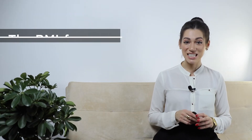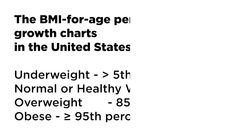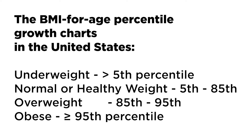The BMI-for-age percentile growth charts are the most commonly used indicator to measure the size and growth patterns of children and teens in the United States. BMI-for-age weight status categories are a bit different from the United Kingdom: underweight is less than the 5th percentile, normal or healthy weight is the 5th percentile to less than the 85th percentile, overweight is the 85th to less than 95th percentile, and obese is equal to or greater than the 95th percentile.